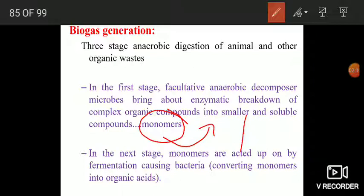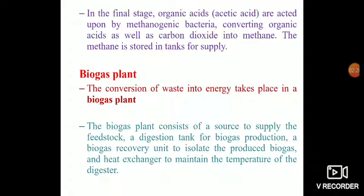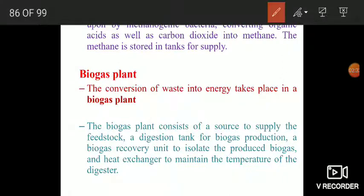In the next stage, the monomers are acted upon by fermentation-causing bacteria which ferment these monomers to form organic acids. Then in the final stage, the organic acids, particularly acetic acid, are acted upon by the methanogenic bacteria which convert the organic acid as well as the carbon dioxide which is produced during fermentation into methane. The methane is then stored in the tanks for supply.